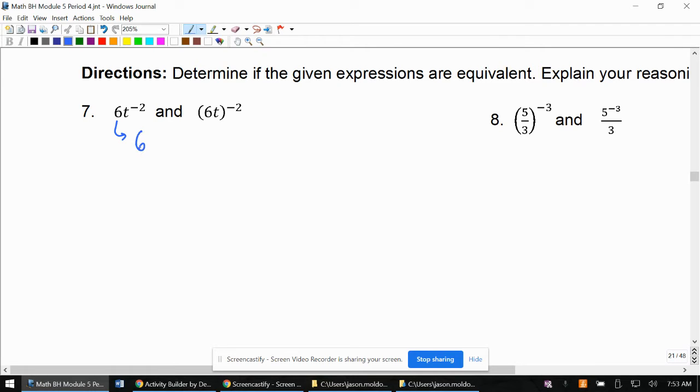So this one, 6t to the negative second written that way, 6 times t to the negative second, can be thought of as just like I said, 6 times t to the negative second. Then we're going to do under the line, change the sign. So we're going to have 6 times 1 over t squared. And we can think of 6 over 1. And when we multiply with fractions, we multiply numerators and denominators. So we have 6 over t squared.